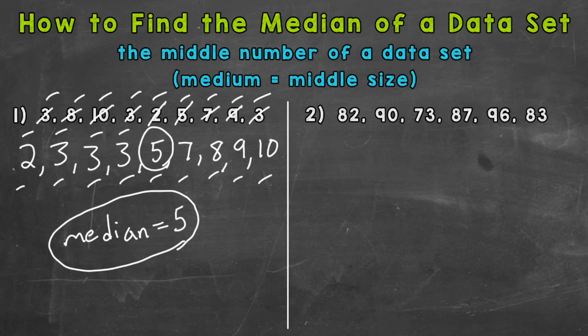And one more thing we should double check. We should always check that we have the same amount of numbers on the left side of that five and the right side of that five, proving that it is directly in the middle. So let's see, we have one, two, three, four on the left and one, two, three, four on the right. So that just proves that that five is our median and in the middle.